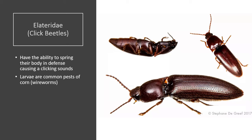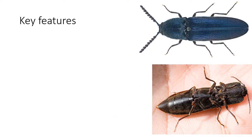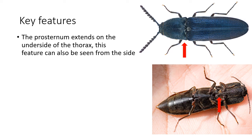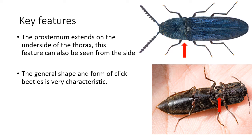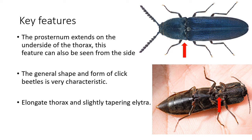The last family we are going to discuss today are the Elateridae, or click beetles. They have the ability to spring their body into the air, which causes a clicking sound. Their larvae are common pests of corn, also known as wireworms. Some key features of these beetles are a prosternum which extends on the underside of the thorax — this feature can also be seen from the side. They have an elongated thorax and slightly tapering elytra. That's it for our workshop on Coleoptera. Be sure to check out our videos on Lepidoptera and Hemiptera as well. Good luck finding beetles!